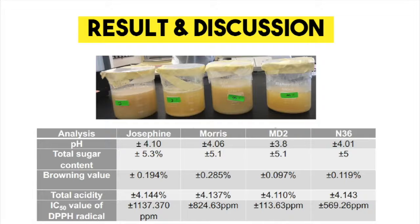To sum up the results and discussion: MD2 has the lowest pH value among the other pineapple peels, while Moris has the highest pH value. This is due to the acidity and active yeast content of the vinegar depending on several factors. Secondly, the lowest total sugar content is N36, which shows a sign of the growth of acetic bacteria in the fermentation.